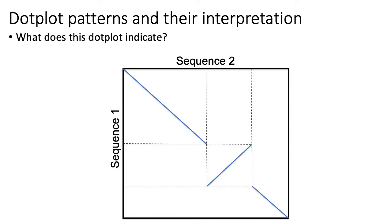Here's a question I want you to take a few minutes to answer before moving on. The diagonal lines at the beginning and end of sequences one and two tell you that the start and end match closely. But I want you to stop the video and think about what that off-diagonal line boxed in dashed lines represents.